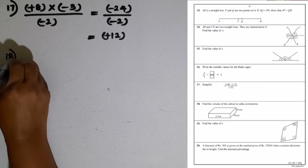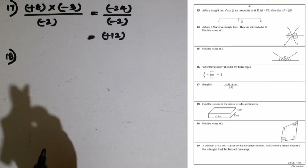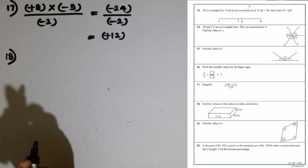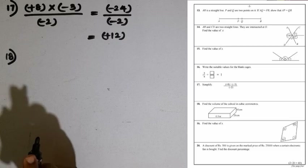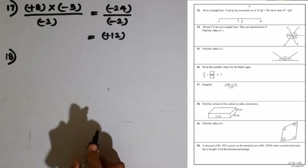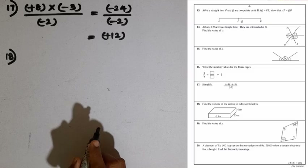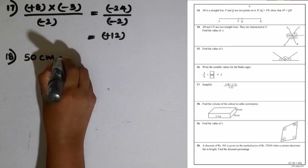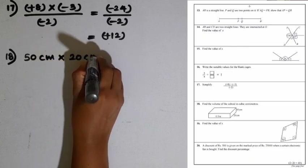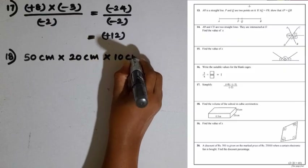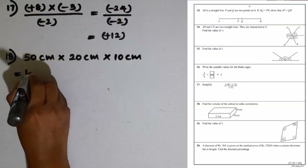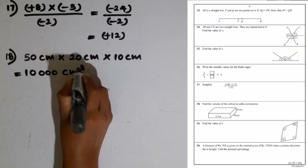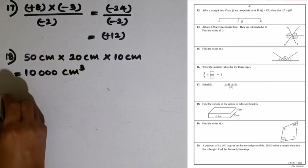Question number 18: find the volume of the cuboid in cubic centimetres. The length is given as 0.5 metres, which we convert to centimetres by multiplying by 100, giving 50 centimetres. The volume is length times breadth times height: 50 cm times 20 cm times 10 cm. 5 times 2 is 10, with three additional zeros, giving 10,000 cubic centimetres.